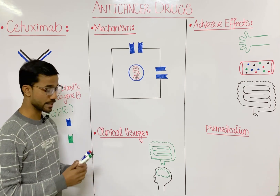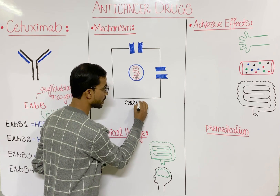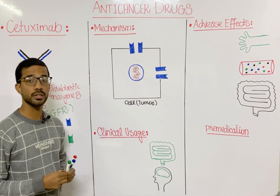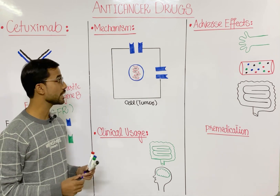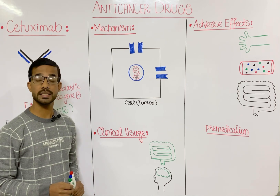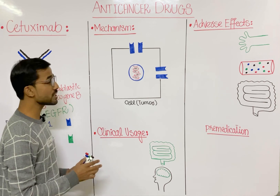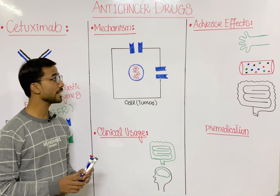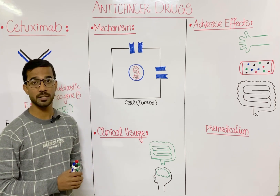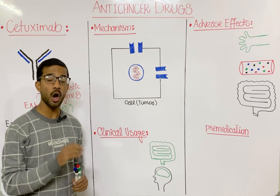Now we will discuss the mechanism of cetuximab. This is a tumor cell, and on tumor cells we see a lot of expression of the epidermal growth factor receptor, or HER1. The most important thing to remember is that these receptors are actually present in dimeric form — they become functional only when they dimerize together.